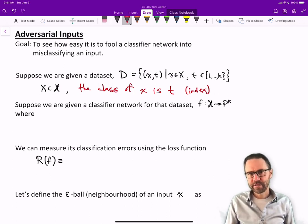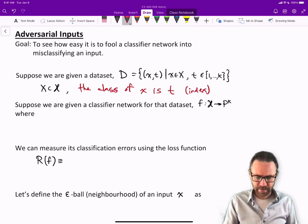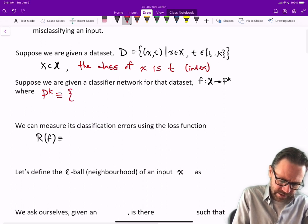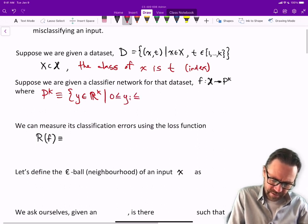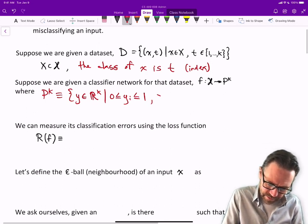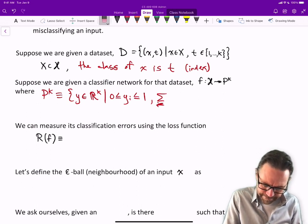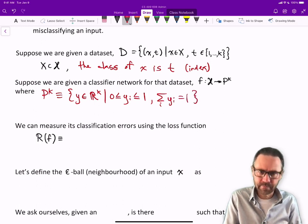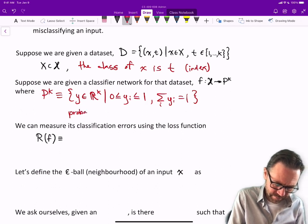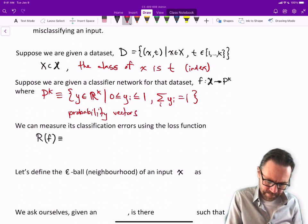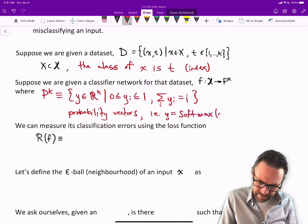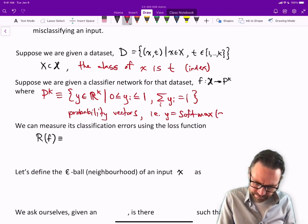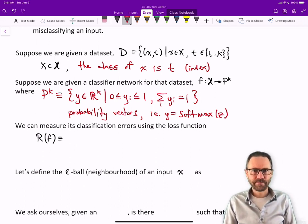Suppose we're given a classifier network for that dataset, F maps the input space X to some other space P_K, where P_K is a space of probability vectors. P_K is defined as the space of vectors Y in R^K, such that the individual elements are between 0 and 1 like a probability, and they add up to 1. For example, Y equals softmax of input.